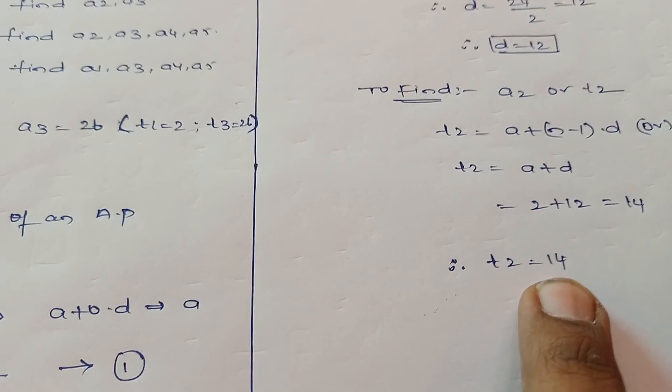Substitute the values: a value is 2, d value we got as 12. Therefore 14. Therefore t2 or a2 equals 14. Second term is 14.